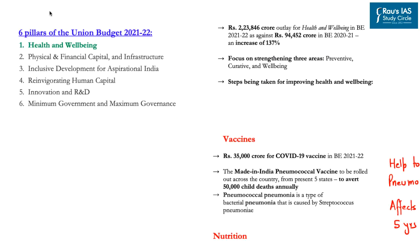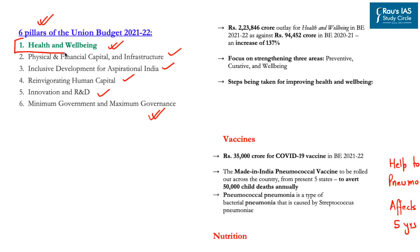The six pillars of the budget are: health and well-being; physical and financial capital and infrastructure; inclusive development for aspirational India; reinvigorating human capital; innovation and R&D; and minimum government and maximum governance. This article focuses specifically on the health and well-being aspect.